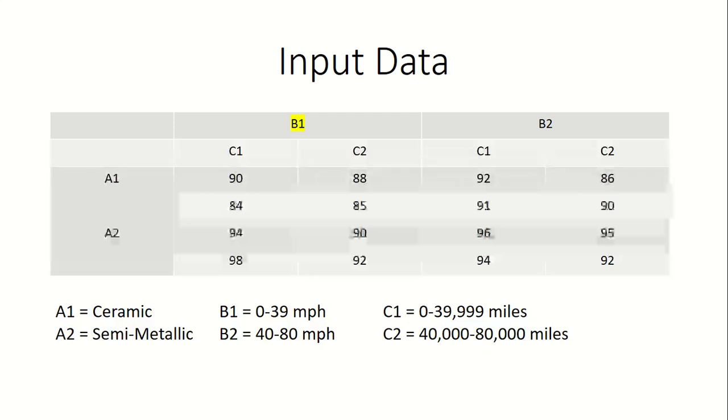For example, the column under B1 shows how material and mileage vary while speed is kept constant between 0 and 39 miles per hour. The highlighted value, 90, shows what happened when the material, speed, and mileage are all kept at their first condition.